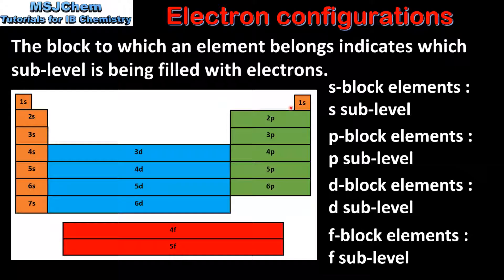It's worth noting that helium, despite being located in the P block, is actually an S block element. Its electron configuration is 1s2, which shows that the S sublevel is being filled with electrons. Helium is located in group 18 because it has a full outer shell of electrons, and therefore it has similar properties to other noble gases.